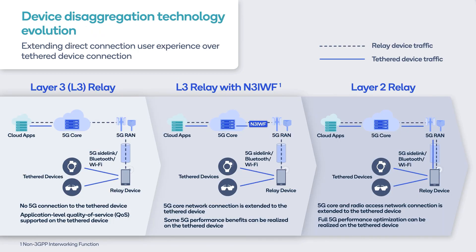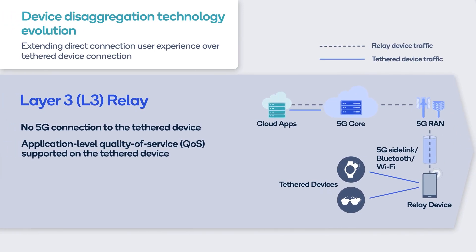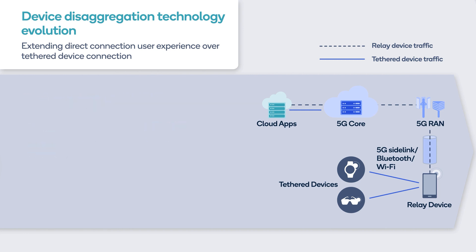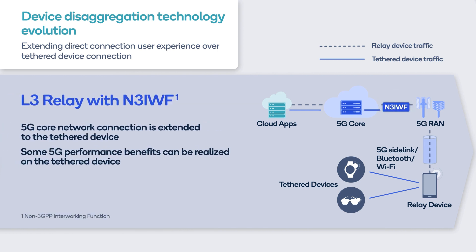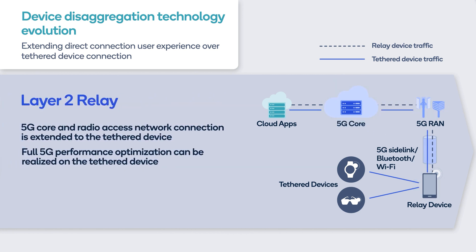There are multiple relaying architecture options currently discussed in 5G standards. A Layer 3 relay provides no 5G connection to the tethered devices, and only application-level quality of service is supported. With an improved Layer 3 relay with N3IWF function, the 5G core network connection is extended to the tethered devices and some 5G performance benefits can be realized. The Layer 2 relay option can fully optimize the performance of tethered devices with both 5G core and radio access network connection extended to them.